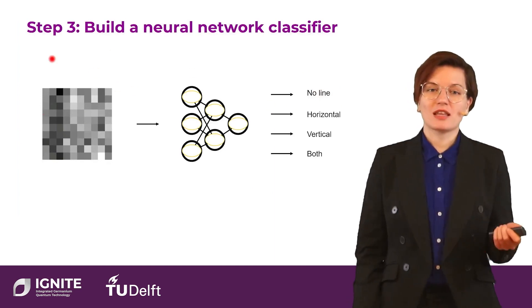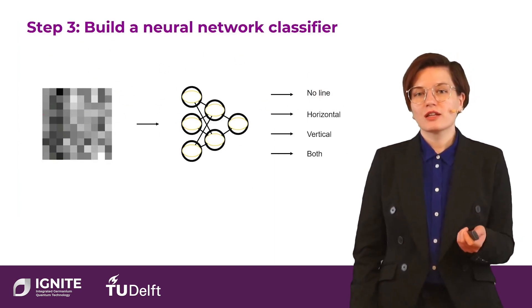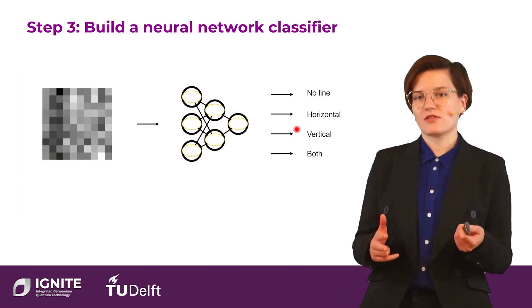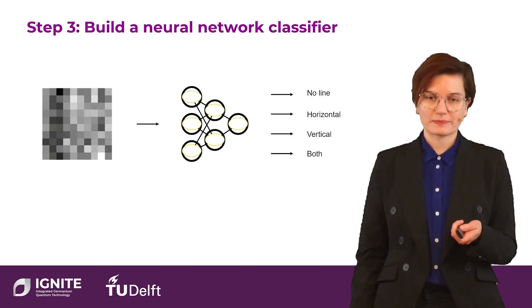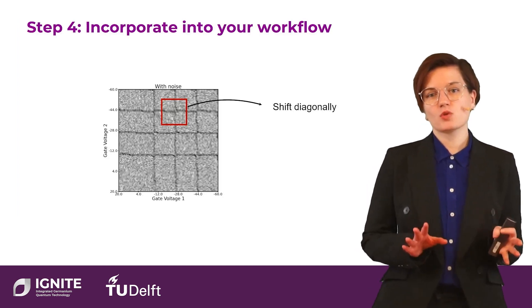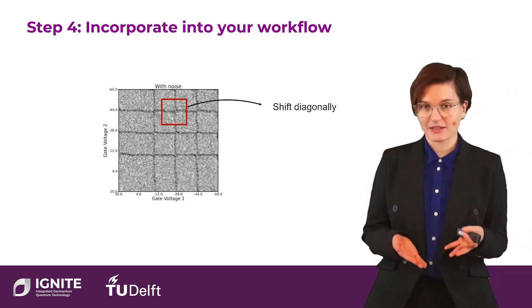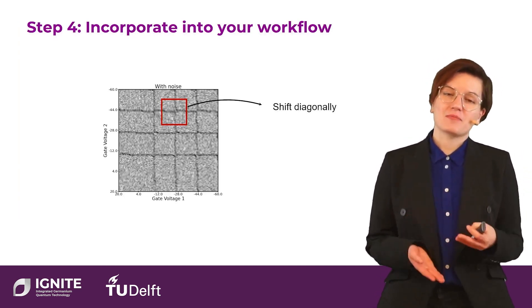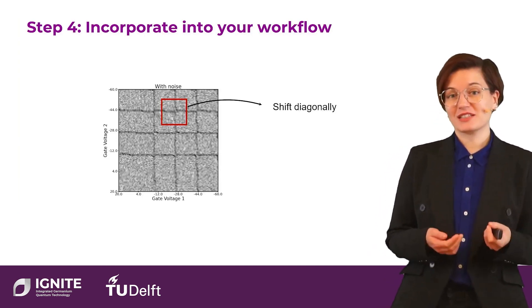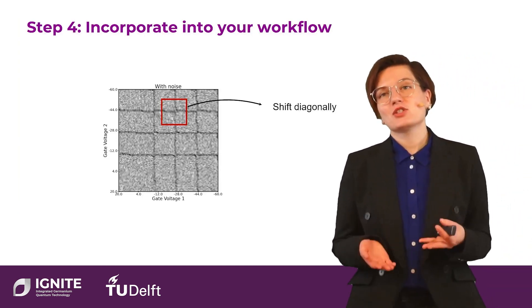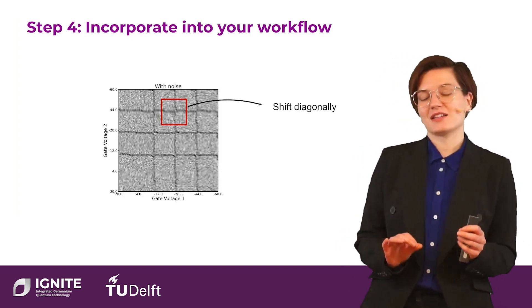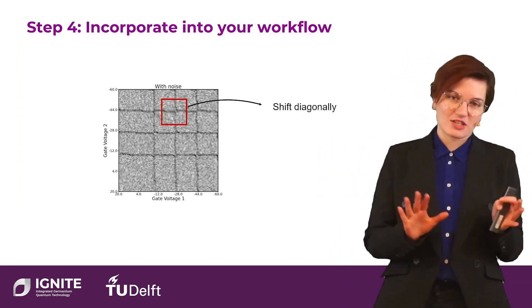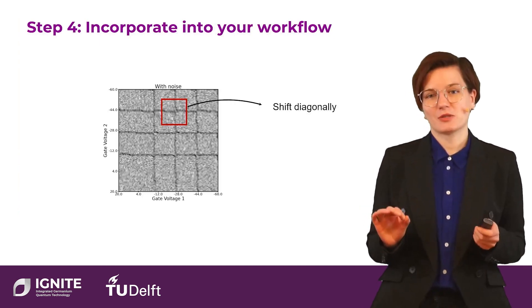For each patch shown, I want to build a neural network model that tells me: is it a no-line, a horizontal transition, a vertical transition, or both? I won't discuss the neural network architecture in depth because that's a machine learning problem, but starting with simulated charge stability diagram data, it shouldn't be too hard with a basic architecture to achieve this four-way classification. So let's pretend we train the neural network and now embed it into our experimental flow.